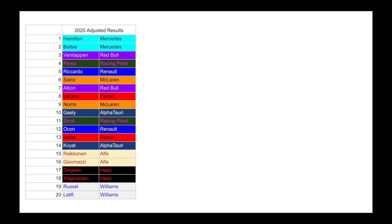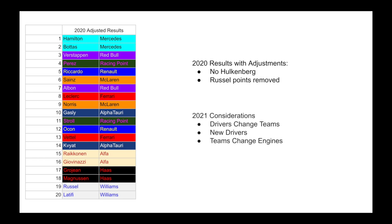If we look at the past results, we do want to make a few adjustments. These adjusted results have no Hulkenberg — he was a reserve driver who came in because some drivers got COVID. I also took away Russell's points because he drove for Mercedes when Hamilton had COVID, and he was scoring points for Mercedes, which isn't a fair reflection on the Williams team where he spent most of the season. For 2021, we also want to consider that some drivers have changed teams, there are new drivers, various teams have changed their engine, Racing Point has become Aston Martin, and Renault has become Alpine.